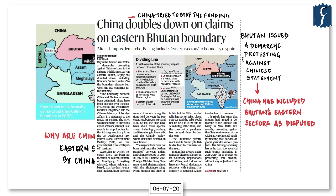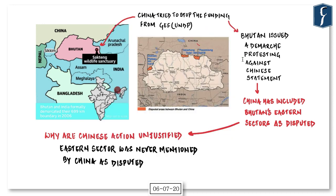The article 'China Doubles Down on Claims on Eastern Bhutan Boundary' appears on page number one. The story starts at Sakteng Wildlife Sanctuary in eastern Bhutan. A program run by UNDP's Global Environment Facility funds conservation there. China tried to stop this funding, which Bhutan protested. Since Bhutan and China have no formal diplomatic relations and no Chinese embassy in Bhutan, the formal complaint was lodged at the Chinese embassy in New Delhi.